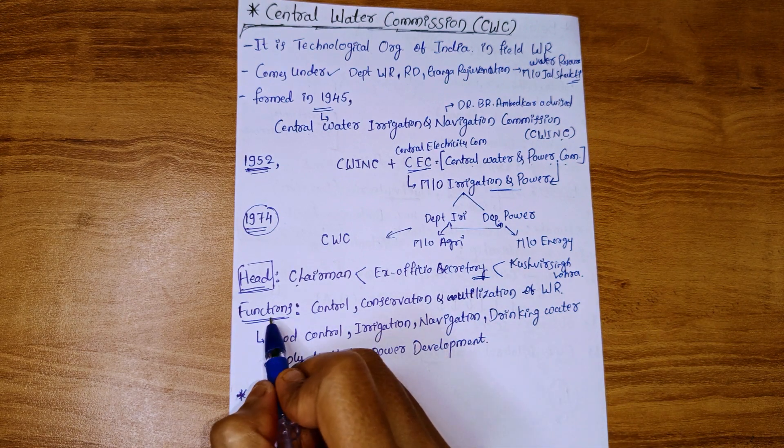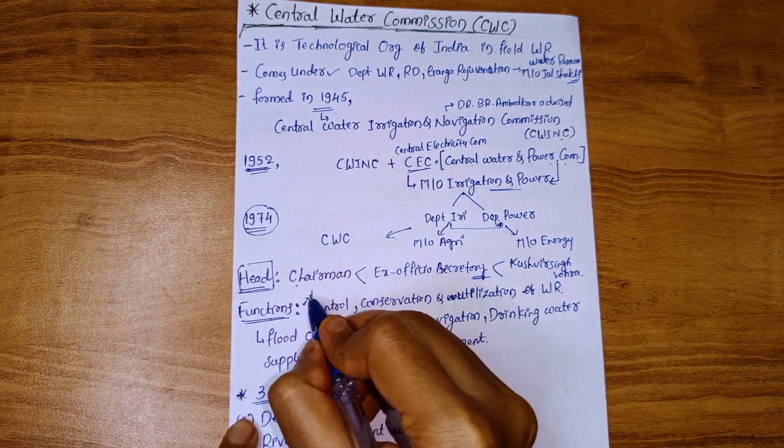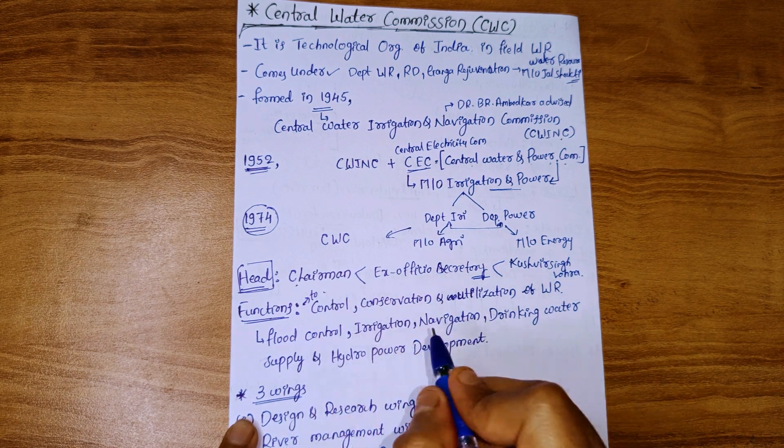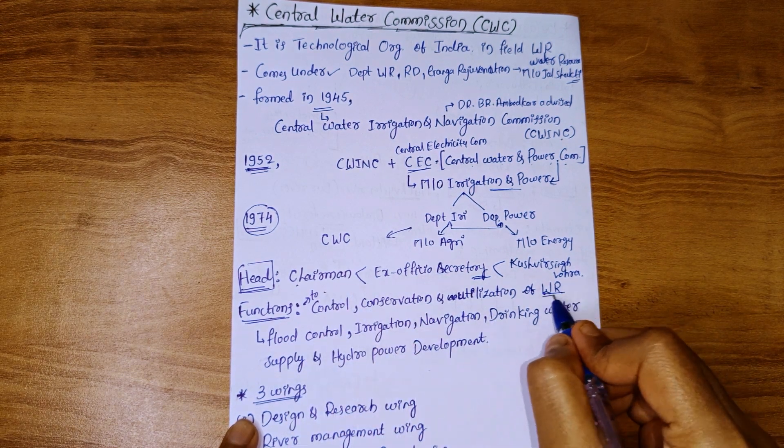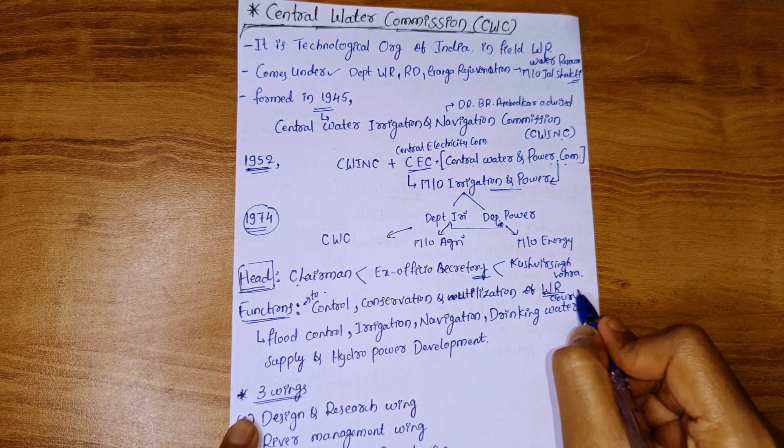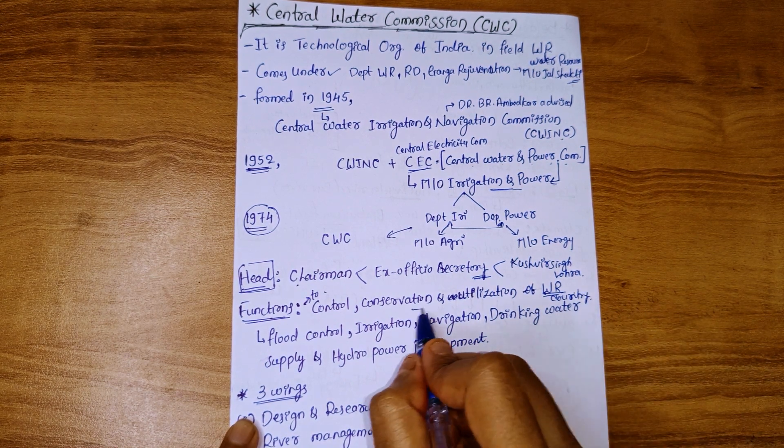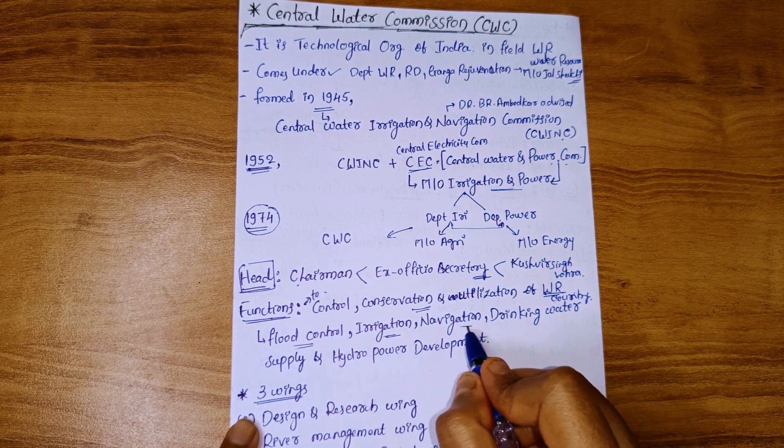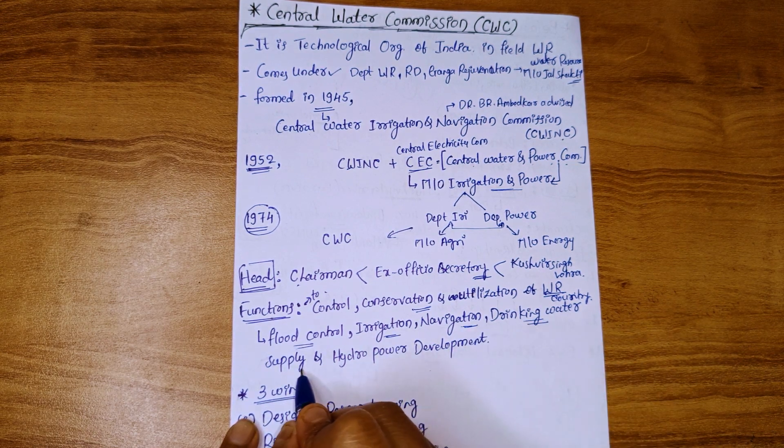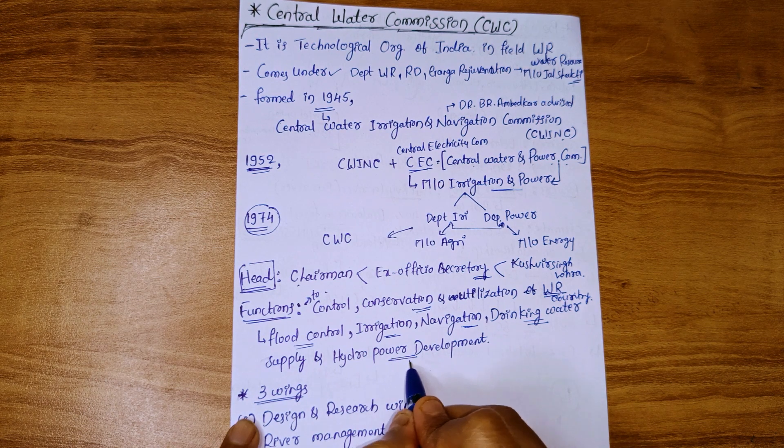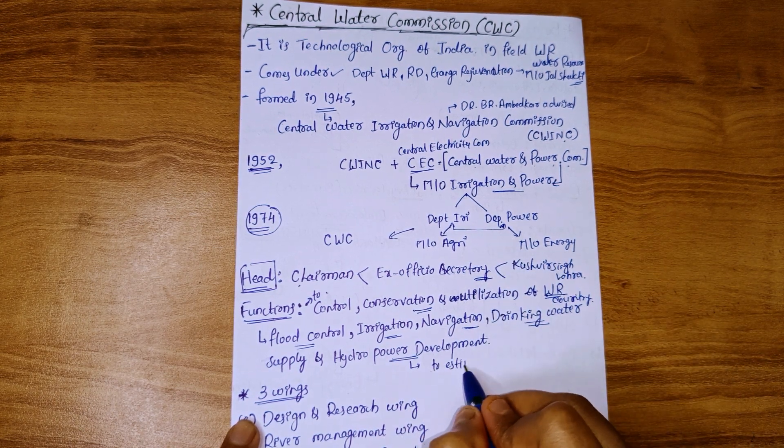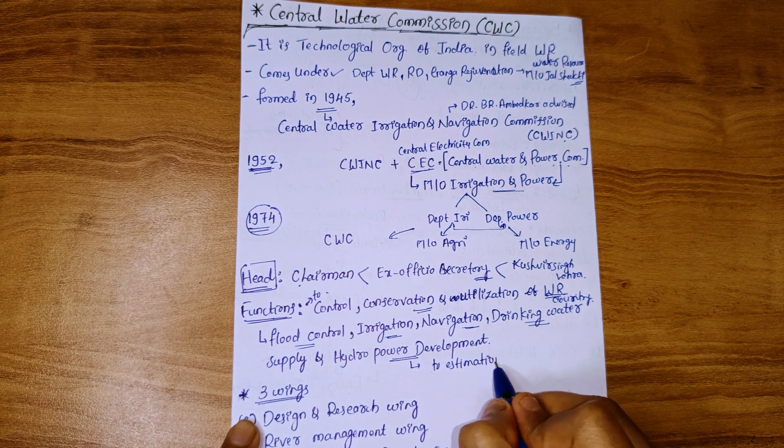Functions of CWC include control, conservation, and utilization of water resources of the country. The purpose is to manage floods, irrigation, navigation, drinking water supply, and hydropower development. Presently, CWC is working on estimation of sedimentation of reservoirs.